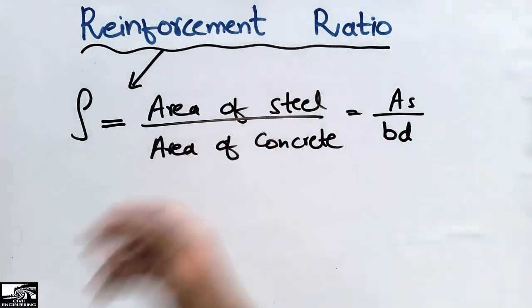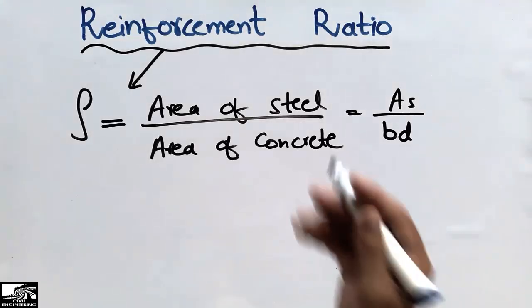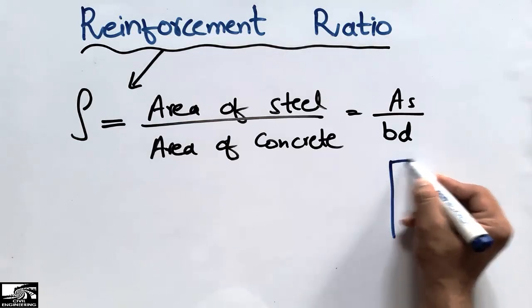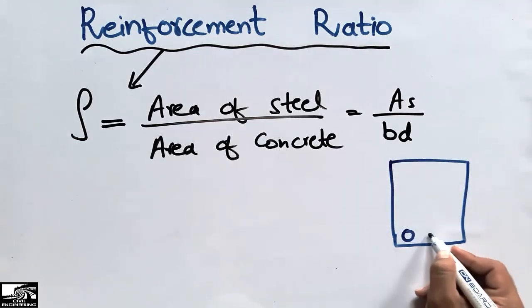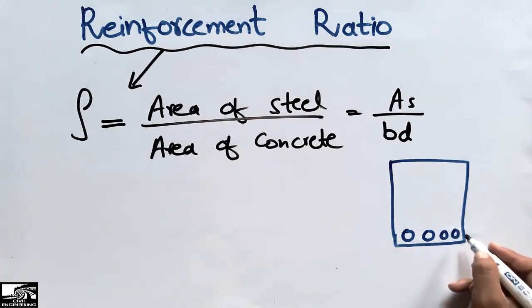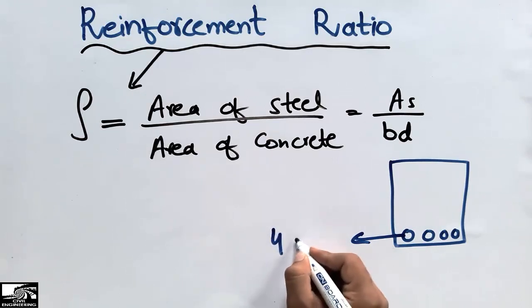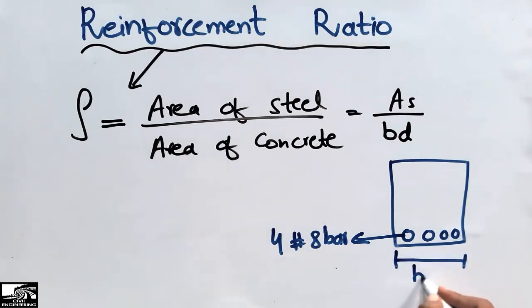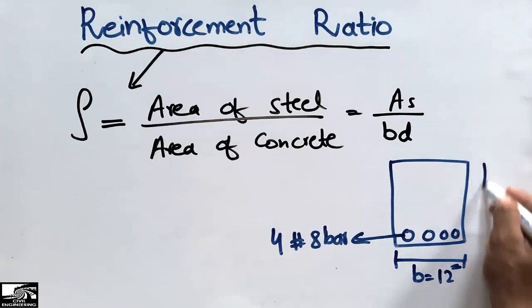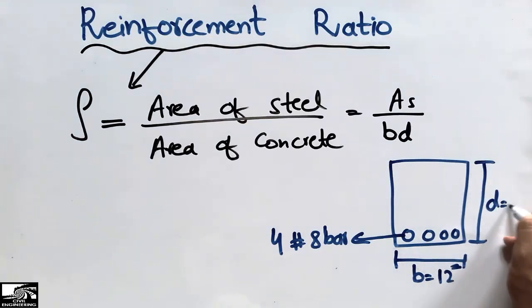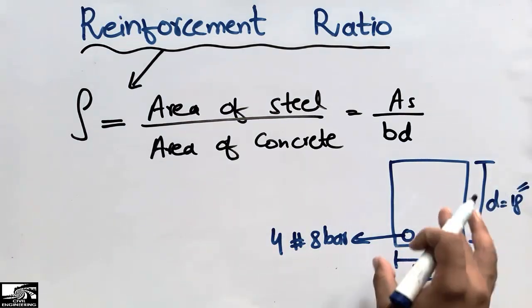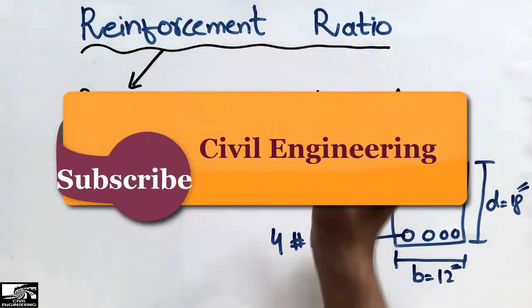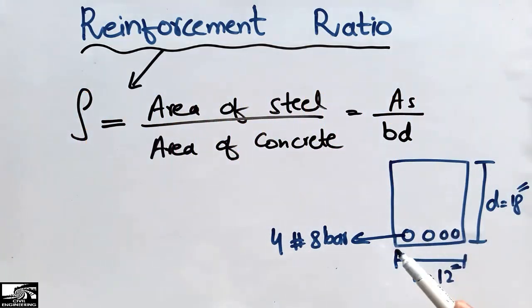Now I will solve one example so you will get some idea of the reinforcement ratio. Consider any beam or column section, and let's suppose four number-eight bars are used — I'm just taking an example. The width of the beam B is 12 inches and the depth of the beam D is equal to 18 inches. After designing this beam, we want to find the reinforcement ratio — how much reinforcement is used in terms of percentage in this structural member.